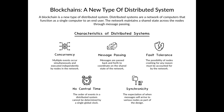Distributed systems have a few characteristics that are important to understand. The first is concurrency — multiple events can occur simultaneously and be executed independently by different nodes in the network. The second is messaging — nodes need to be constantly passing messages about changes they think should be made to the network to coordinate on the information that they agree on. The third is fault tolerance. Because network behavior can be unpredictable, nodes can crash for any arbitrary reason, and networks must be designed to account for this when it happens.